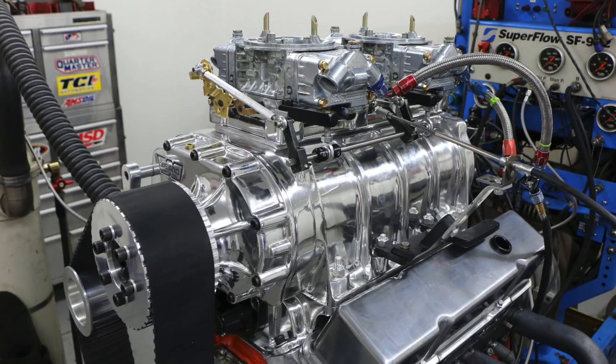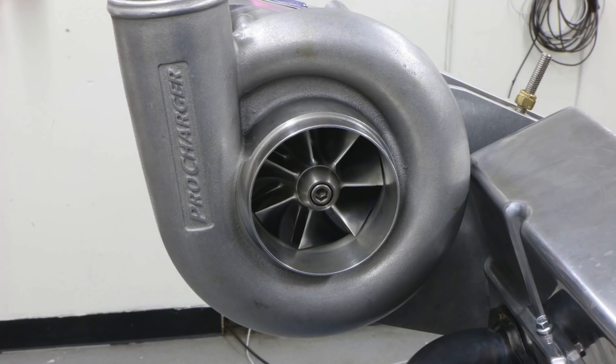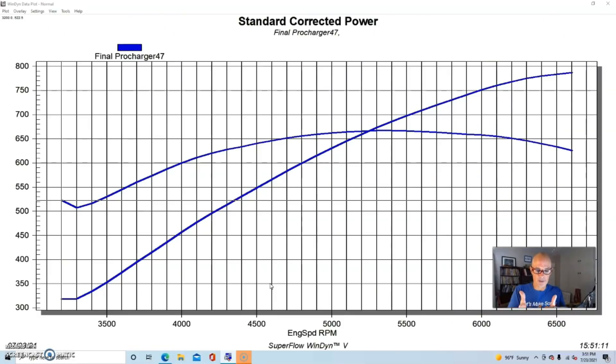As a follow-up test on the 383 small block Chevy, we first ran it with a 671 and then we ran it with a ProCharger F1A-94. We ran it with the pump gas race gas mix like we did with the 671, and then we also ran it with E85. The interesting thing is the difference—the gains offered by the E85 were less on this particular application. I'm going to try to show you why here.